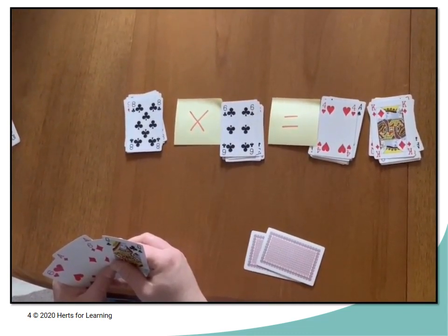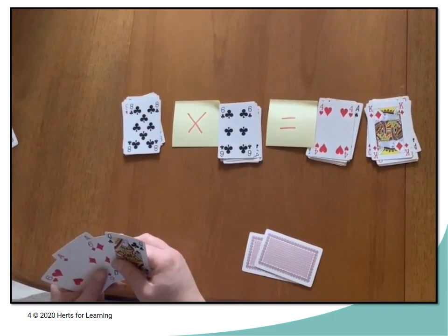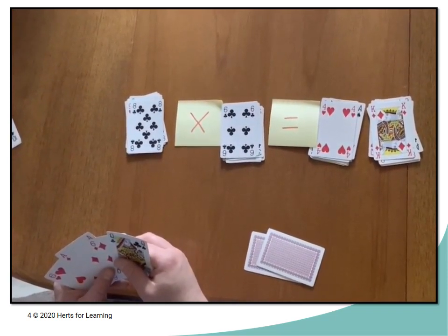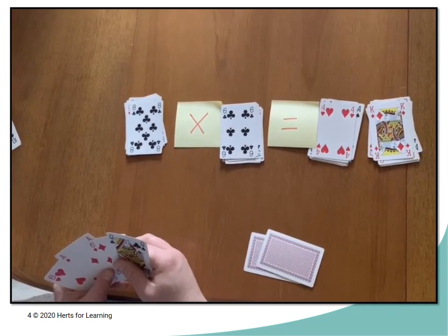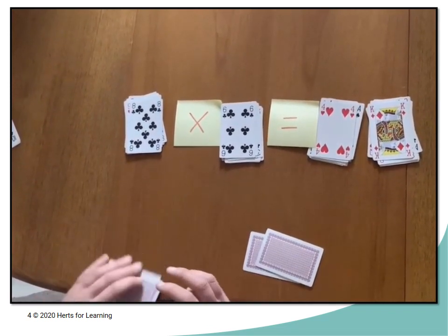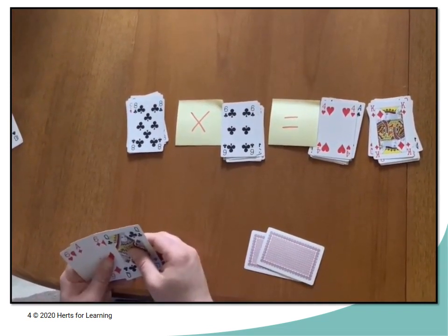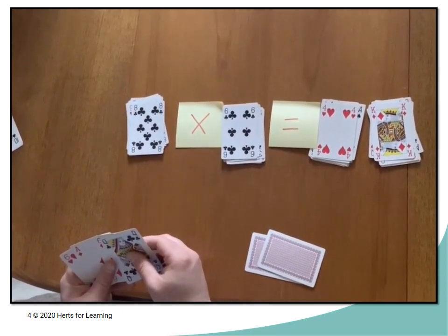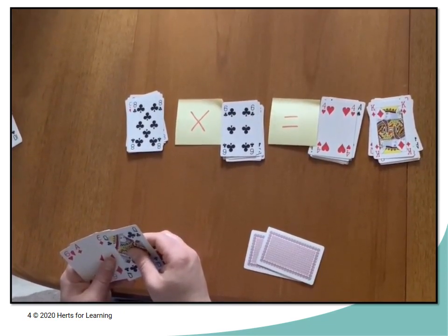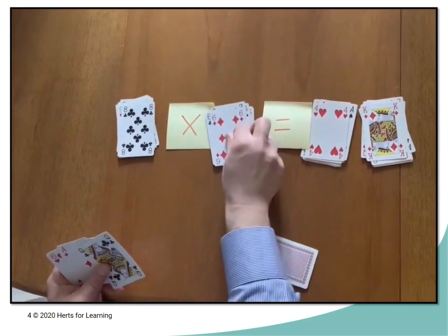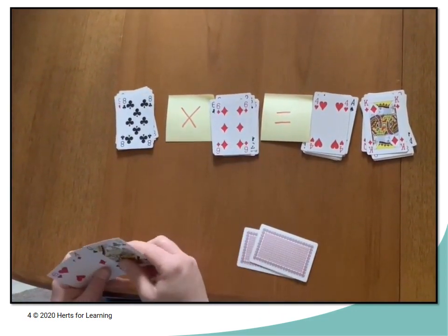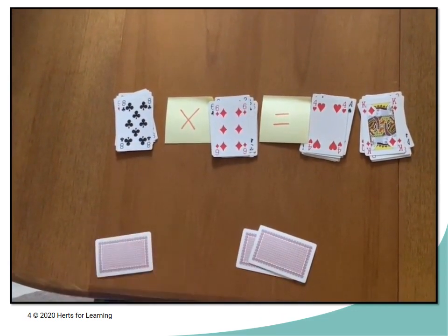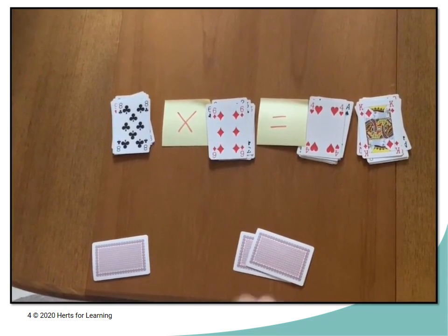So 5 would be useful there. 8 times 5 is 40, they could get rid of a 5 and a queen but they haven't got a 5. They could lay the duplicate 6 down so that they get rid of that 6.